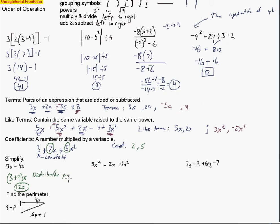Over here we're using a few properties — first the commutative property. I'm going to combine 3x² with 5x²: move them next to each other. Notice the signs are the same, so you add those two coefficients together, keeping the exponent the same. You're counting how many x squareds you have: 5x² plus 3x² gives 8x² minus 2x. That's the answer — you can't combine further because they don't share the same variable raised to the same power.